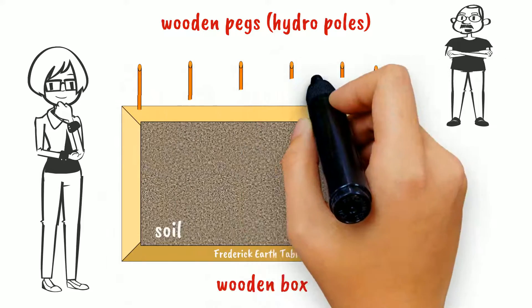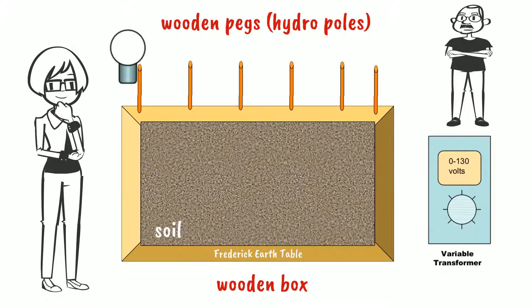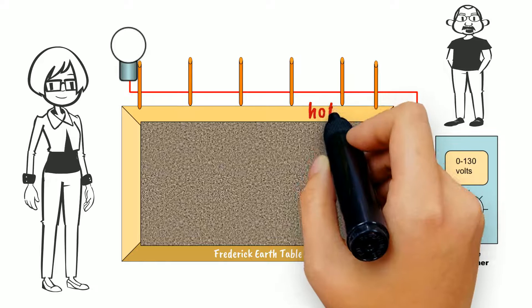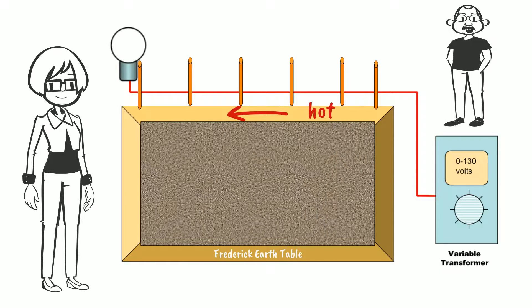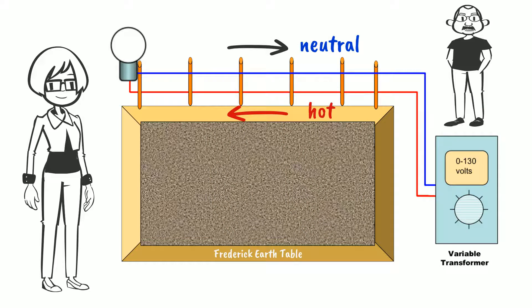I then added wooden pegs and attached an LED bulb to the last peg. Next I took a variable transformer that allows me to increase the voltage. I then connected an electrical wire to the transformer and to the light bulb. The wire in red is the hot wire. The wire in blue is the neutral wire that completes the circuit.